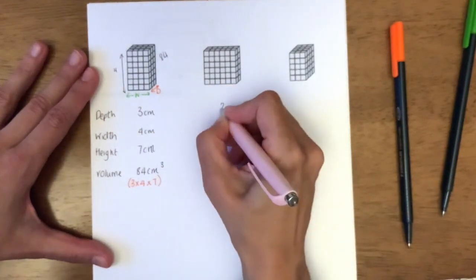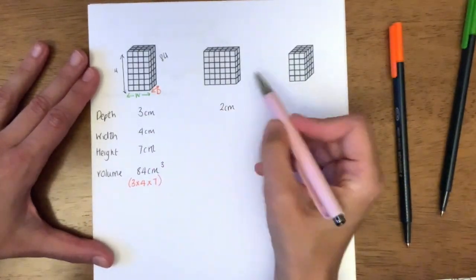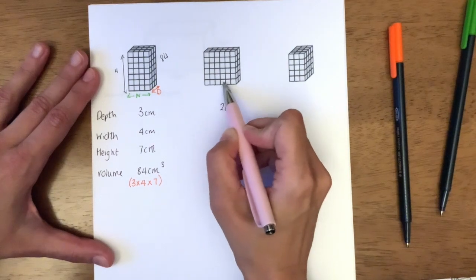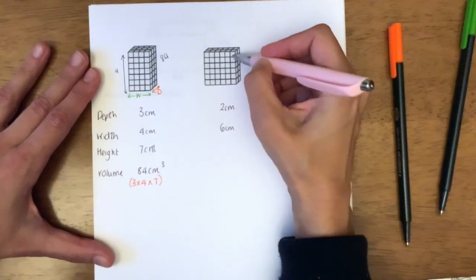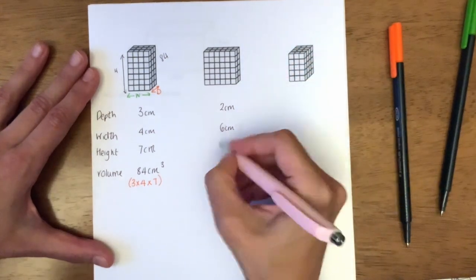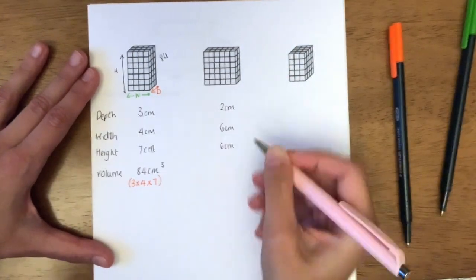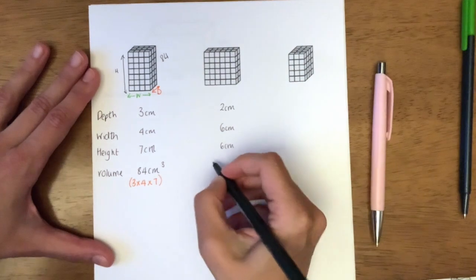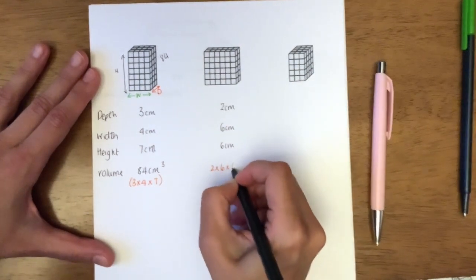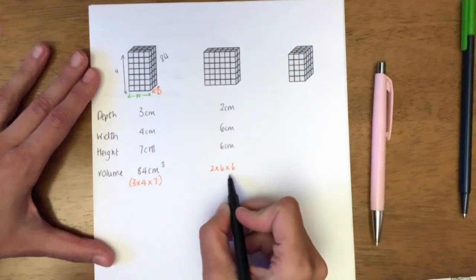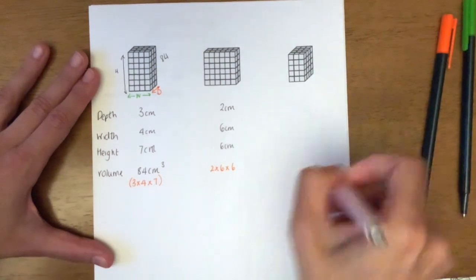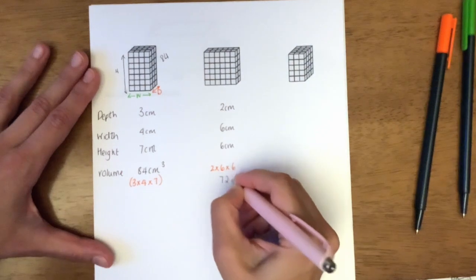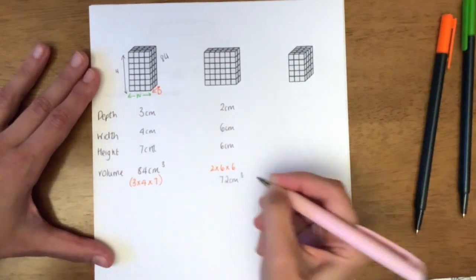Let's have a look at the second one. The depth is two. The width is 1, 2, 3, 4, 5, 6. And the height is also 1, 2, 3, 4, 5, 6. To work out the volume, I do two times six times six. Six times six is 36, and 36 times two is 72. So 72 centimeters cubed.